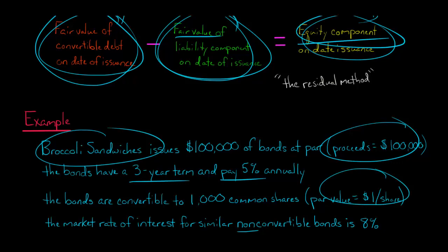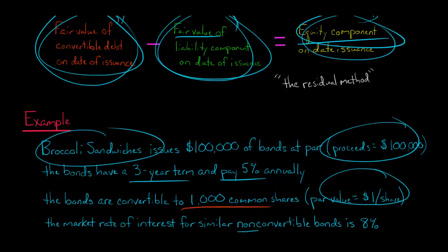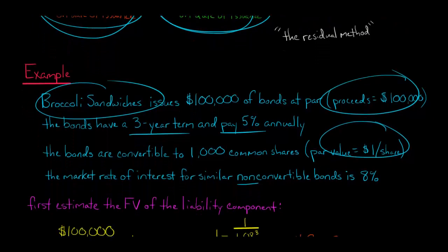The market rate of interest for similar non-convertible bonds is 8%. What does that mean? If we had a bond for a company with similar risks and similar everything, except that it was non-convertible and didn't have the option to convert to 1,000 common shares, then it would carry an interest rate of 8%. The difference between the 8% and the 5% — those three percentage points — really has to do with this conversion feature, which is why it's a lower cost of interest.